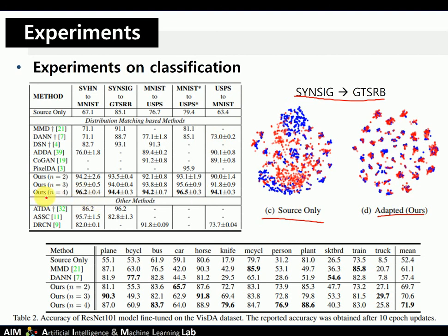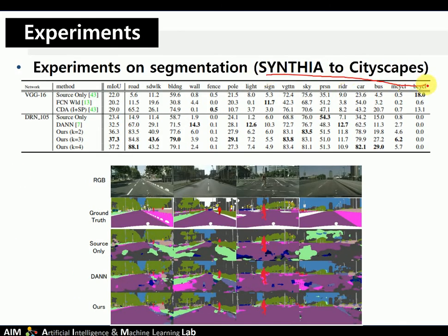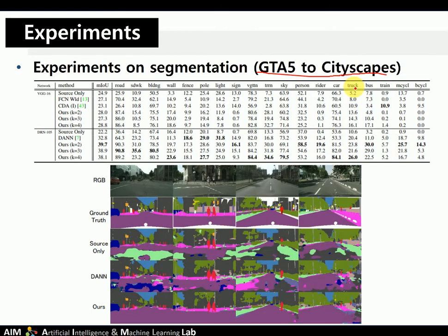Their method outperforms previous methods. They also evaluate on an object classification dataset, the VISTA dataset, which consists of synthetic objects as source images and real object images as target images. This dataset represents the largest cross-domain object classification benchmark. Their method achieved accuracy much better than distribution-based methods, MMD and DNN. They also applied their method to semantic segmentation, evaluating on two dataset pairs: GTA5 to Cityscapes and SYNTHIA to Cityscapes, achieving better performance in both quantitative and qualitative aspects than previous works.